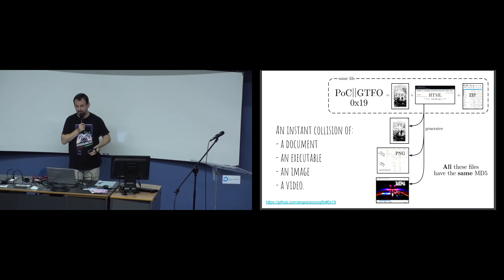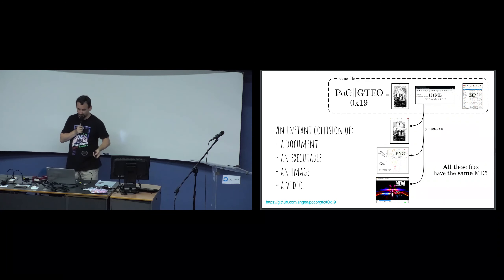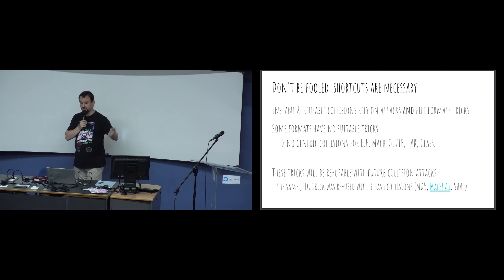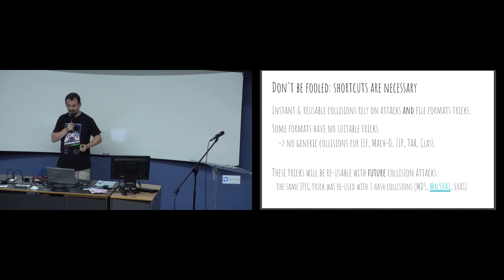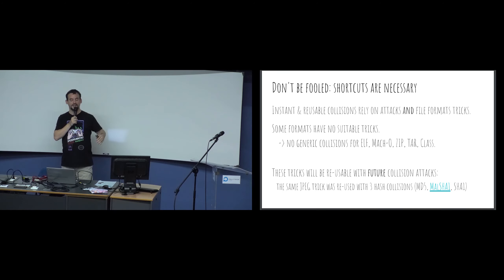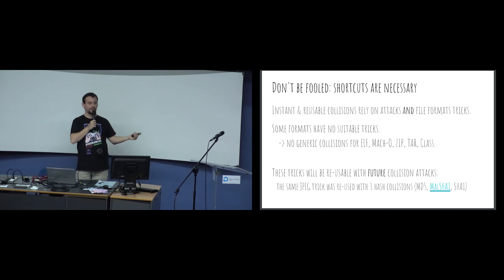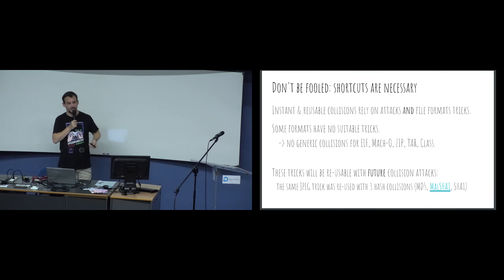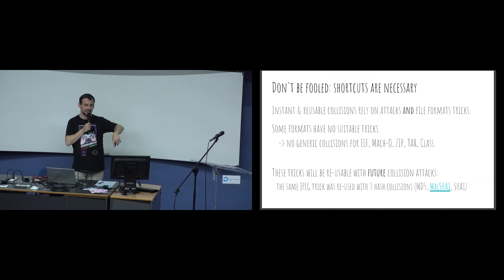It's an instant collision of four completely different file types. Don't be fooled - it's not just the crypto attack; extra tricks are necessary. There are no shortcuts for ELF, macro, ZIP, TAR, or Java class. But the good news is these tricks can be reused for future collision attacks. For example, the JPEG trick I used first for MD5 was the same trick I used for the SHA-1 attack.